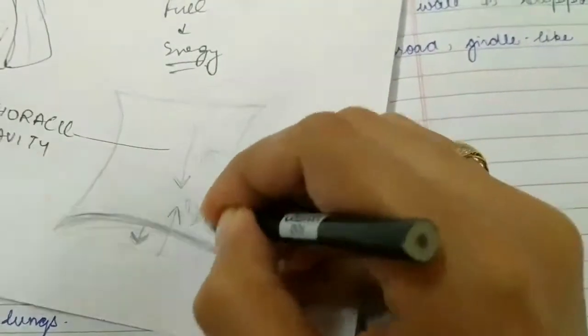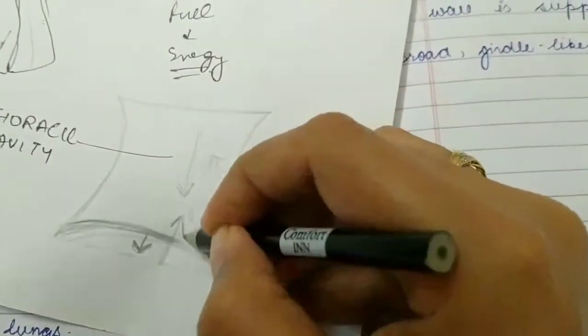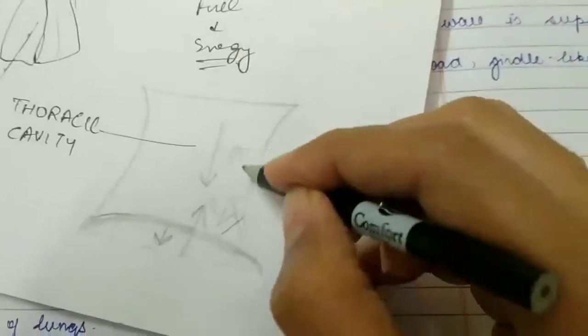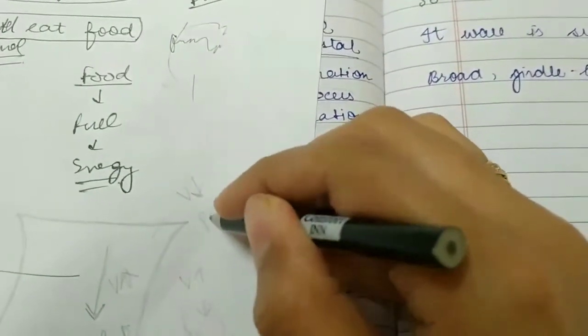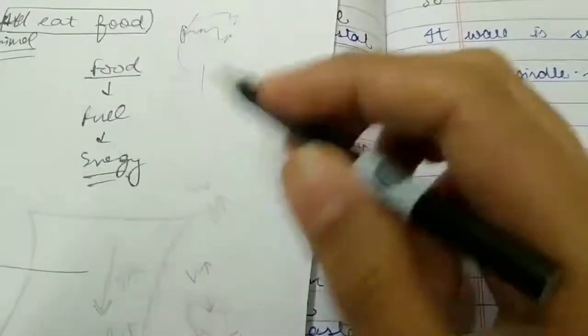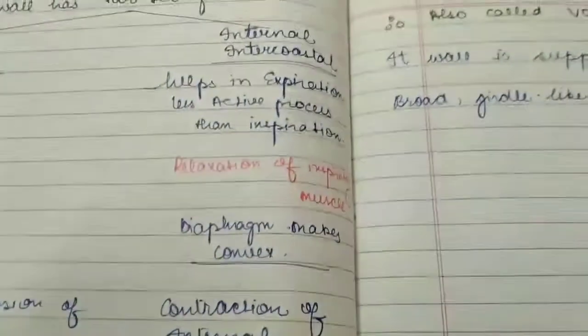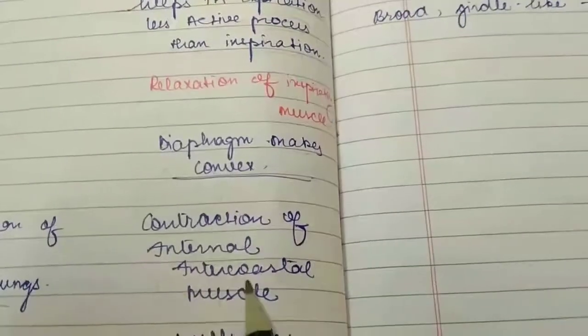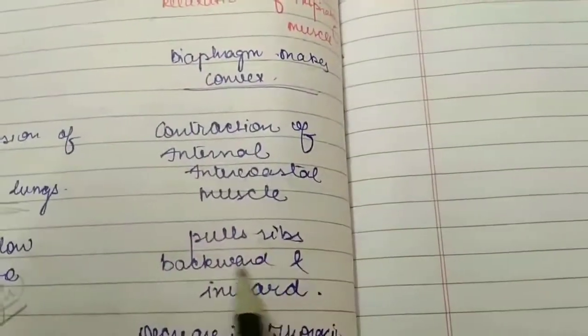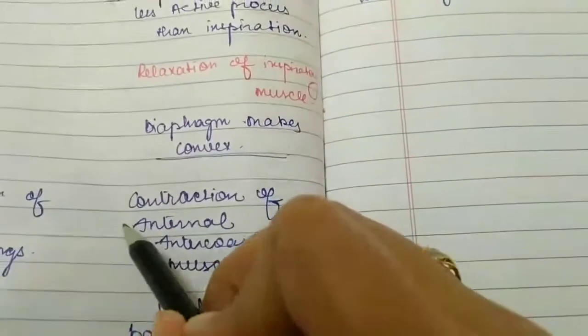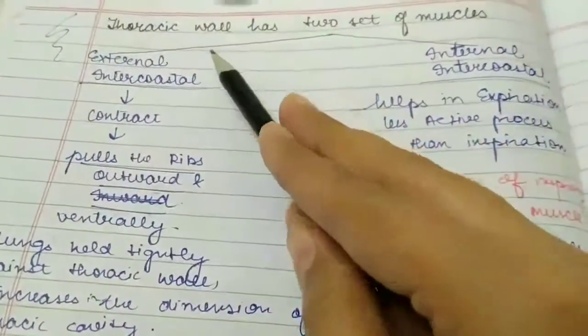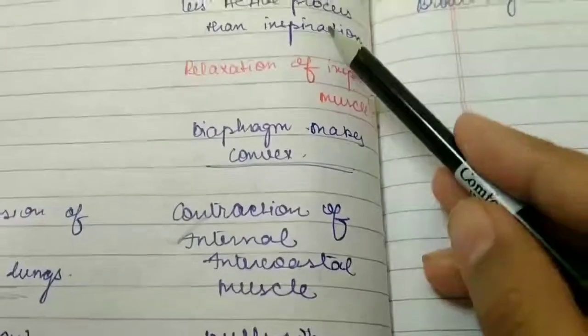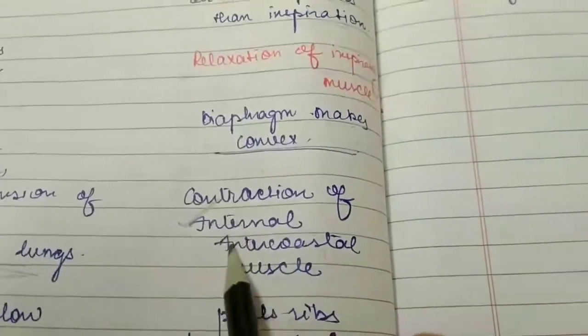During expiration, it will become convex in shape, then the volume decreases and pressure increases. From high pressure to low pressure, air moves. Contraction of internal intercostal muscles pulls the rib backward and inward. In inspiration there was contraction of external intercostal muscles; in expiration there is contraction of internal intercostal muscles.